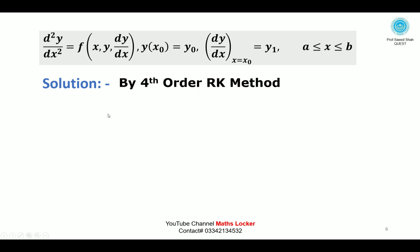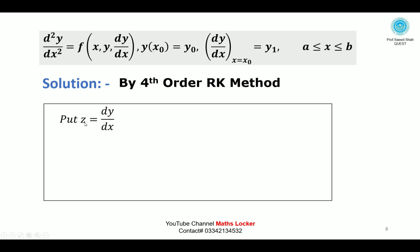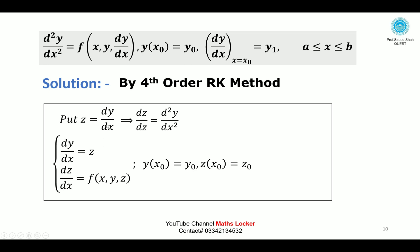Solution by 4th Order RK Method: put z = dy/dx, then differentiate it — dz/dx = d²y/dx². The first equation comes from the substitution: dy/dx = z. The second equation: substituting dz/dx in place of d²y/dx² and z in place of dy/dx, we can write dz/dx = f(x, y, z). Initial conditions become: y(x₀) = y₀, and z(x₀) = y₁, which we call z₀. So the initial point is (x₀, y₀, z₀).